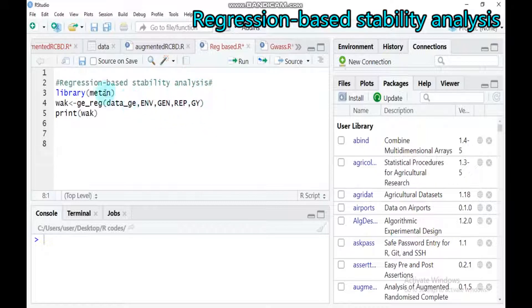The concept of regression-based stability analysis was coined by Evert and Russell around 1966. They suggested that the linear as well as non-linear components of G by E interaction should be considered in determining the phenotypic stability of a particular genotype.